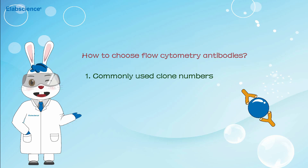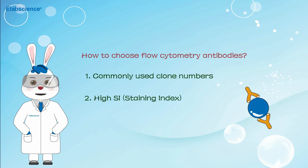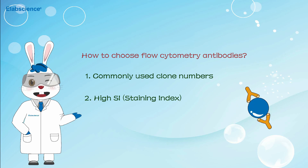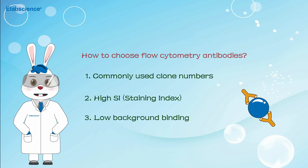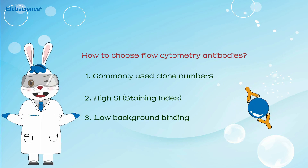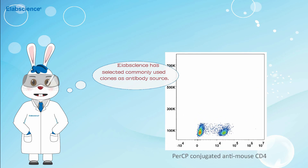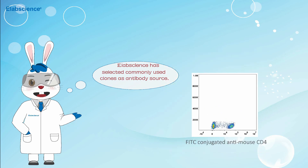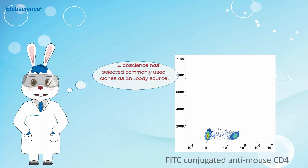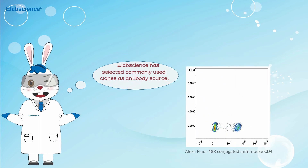1. Commonly used clone numbers. 2. High SI. 3. Low background binding. E-Lab Science has selected commonly used clones as antibody source.